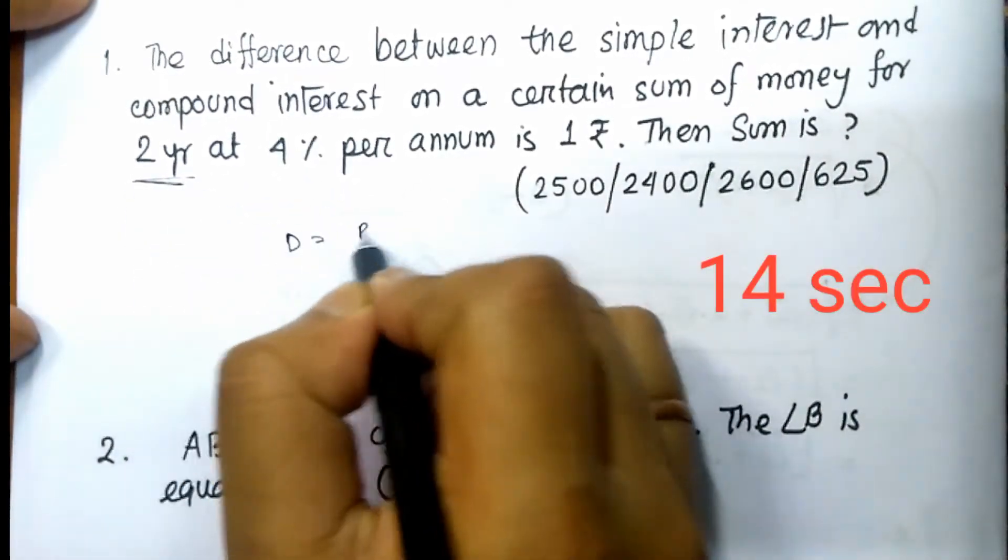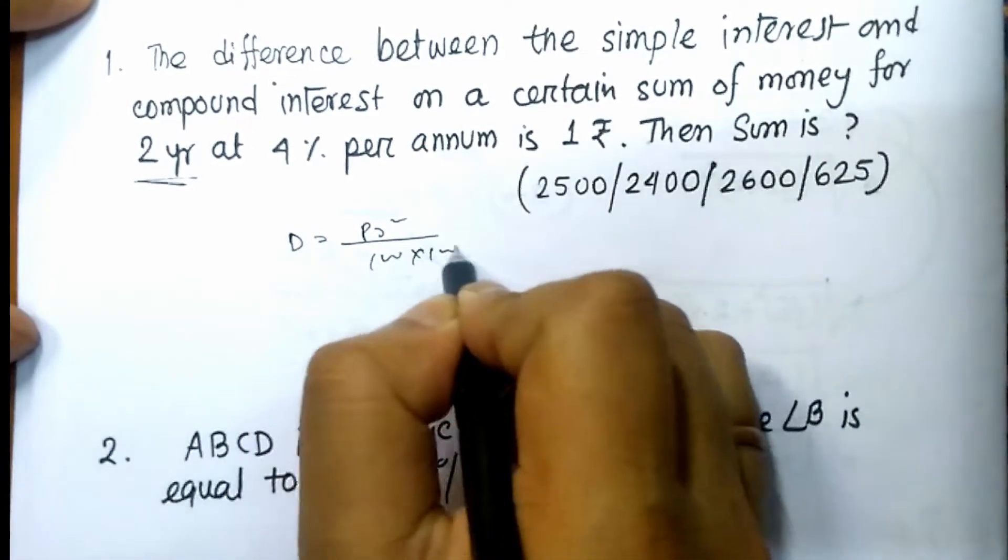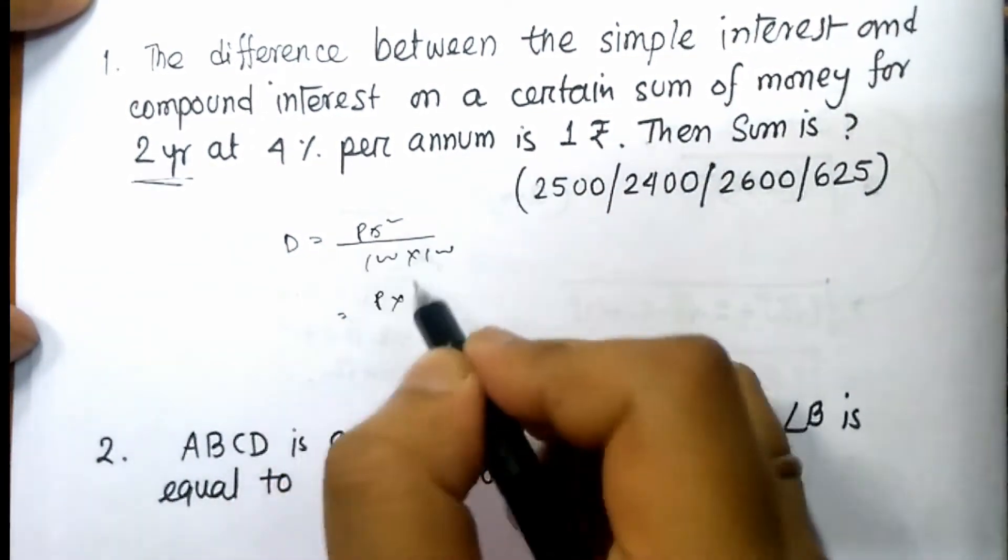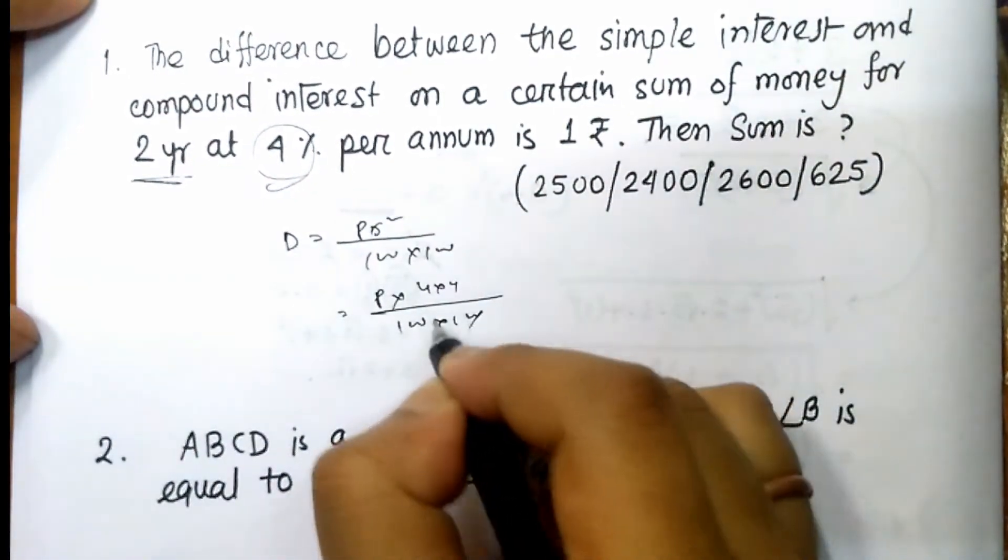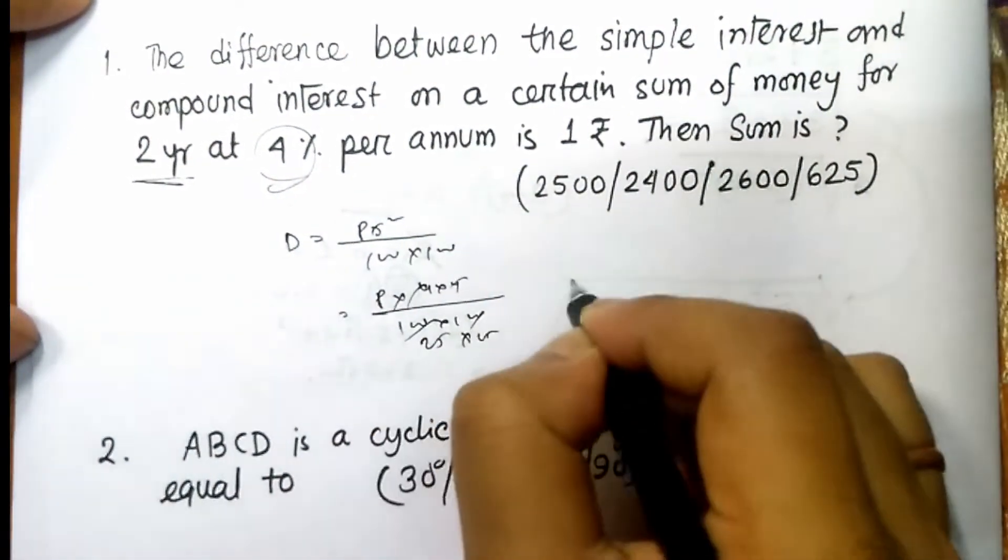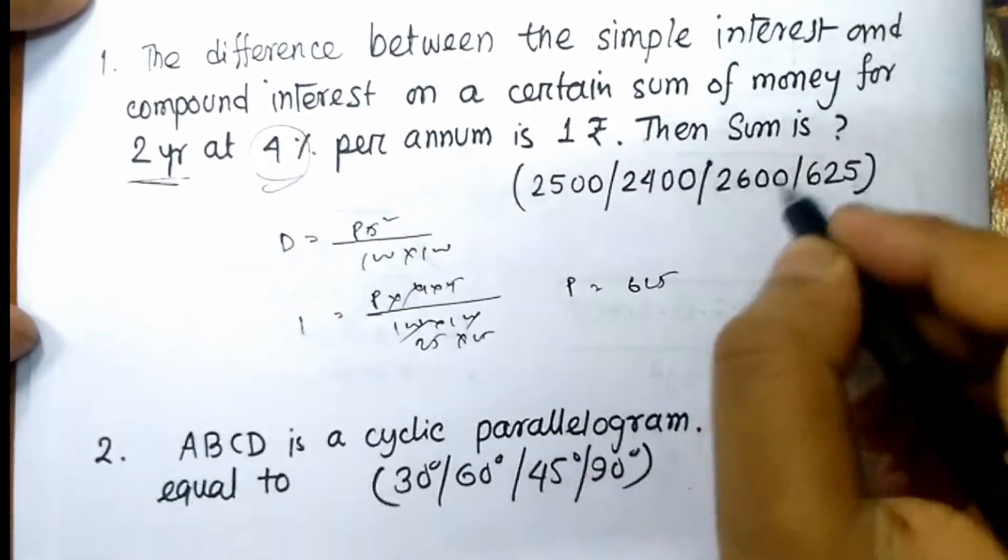Difference is equal to P R square by 100 into 100. We have to find P. R is 4%. 4 into 4, 100 into 100, 25 into 25. Difference is 1. P is 625. Answer.